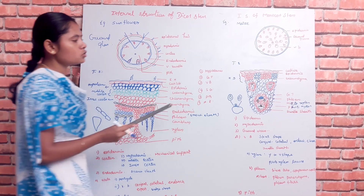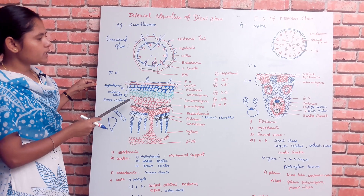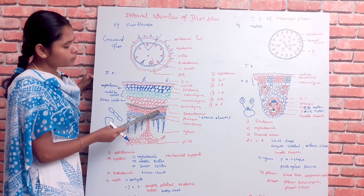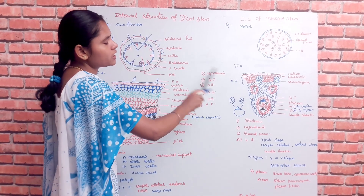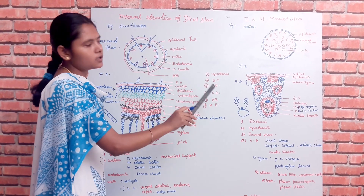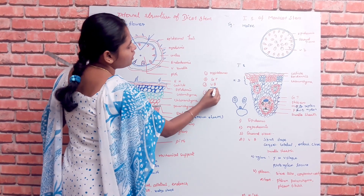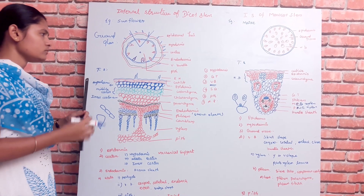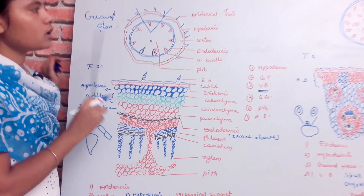The second difference is ground tissue. In the dicot stem, the ground tissue is differentiated into cortex, endodermis, and pericycle. In the monocot stem, the ground tissue is not differentiated — cortex, endodermis, and pericycle cannot be identified separately.